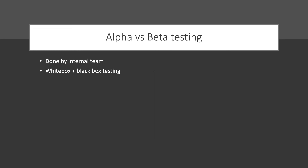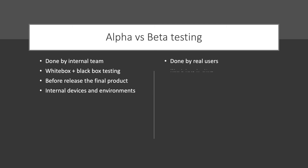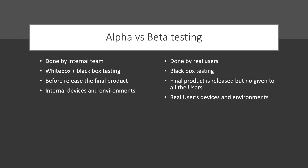Now the differences between alpha and beta testing. Alpha testing is done by the internal team — it involves white box plus black box testing, with both developers and QA doing their jobs. It is done before the release of the final product, on internal devices and environments. Beta testing is done by real users — you provide your application to real users and they try it out. For enterprise products you ask customers to install it and try it. It is black box testing because real users don't have access to the code. The final product is enabled for only a few users on their own real devices and environments.